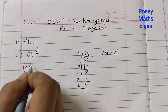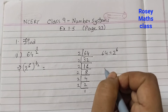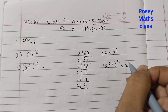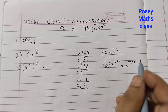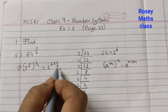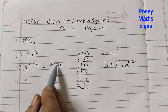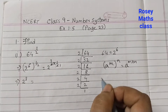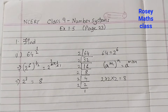So 64^(1/2) equals (2^6)^(1/2). We use the law of exponents: a to the power of m, the whole thing to the power of n, equals a to the power of m × n. So the powers multiply: 6 × 1/2 = 3. Therefore we get 2 to the power of 3, which is 2 × 2 × 2 = 8. The answer is 8.